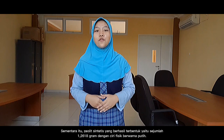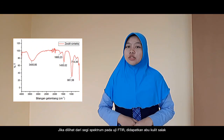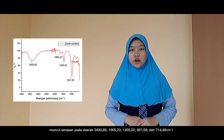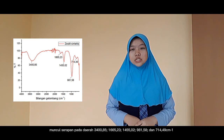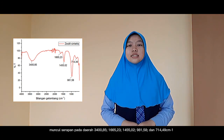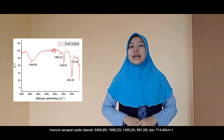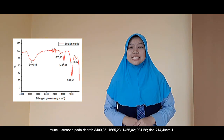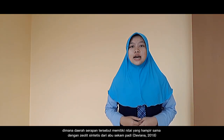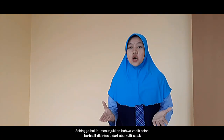The synthetic zeolite successfully formed weighed 1.26 to 18 grams with characteristic physical properties. When viewed in terms of the FTIR spectrum, it was found that the absorption peaks of salak bark appeared at 3,485; 1,665.23; 1,455.02; 981.58; and 714.49 cm⁻¹. These absorption areas have approximately the same values as synthetic zeolite from a reference study (Deviana, 2018), showing that zeolite has been successfully synthesized from salak bark.